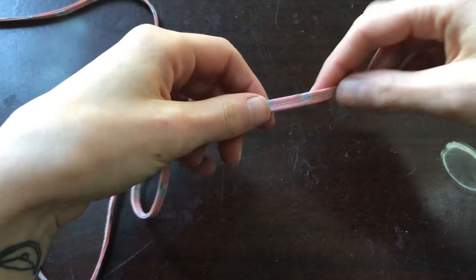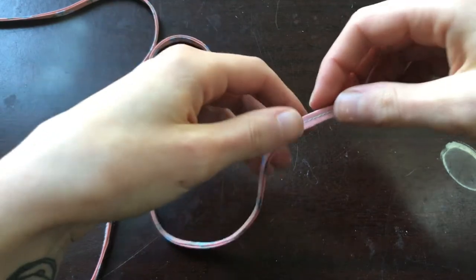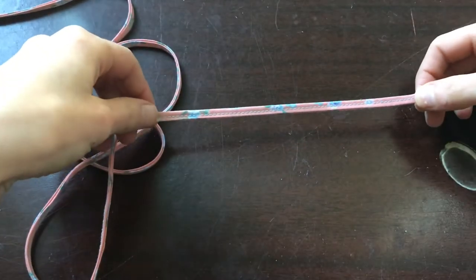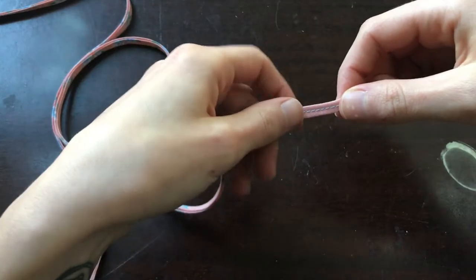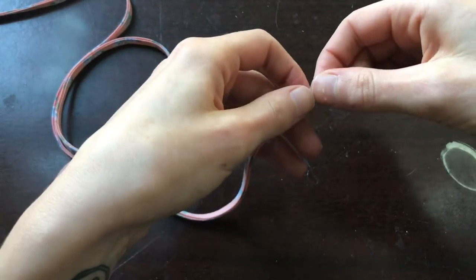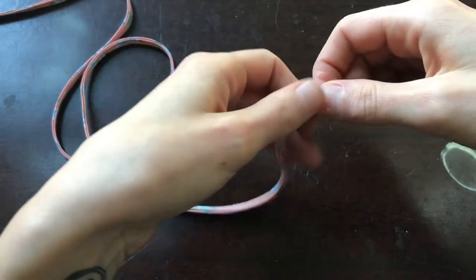I started by making quarter inch bias tape and then I cut two pieces that were the same length as my shoelaces and then just did a straight stitch all the way down with my sewing machine.